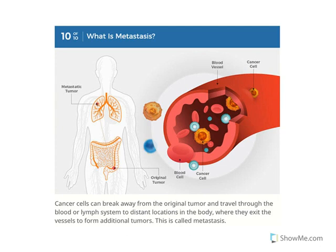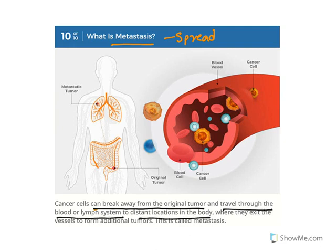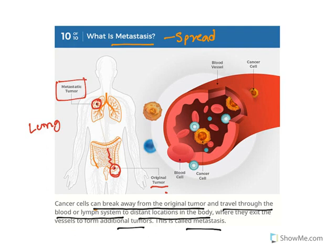Metastasis is the process through which cancer spreads. Cancer cells can break away from the original tumor and travel through the blood or lymph system to distant locations in the body, where they cause additional tumors. For example, the original tumor may be a colon tumor, but after metastasis it spreads through the blood, attaches to the lungs, and forms a tumor there — becoming a metastatic lung tumor.